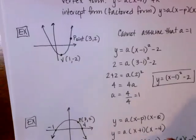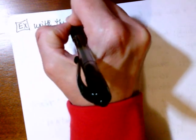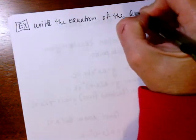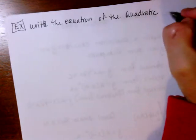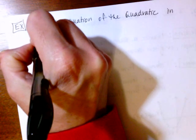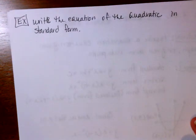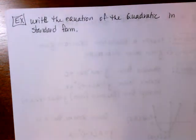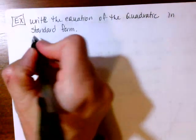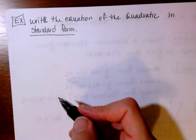Let's move on and do another example — very short lecture today. This one says: write the equation of the quadratic, and this time it wants it in standard form. Always make sure you pay close attention to the directions — whether you can leave it in vertex or factored form, or if you need to convert to standard form. This one specifically asks for standard form.